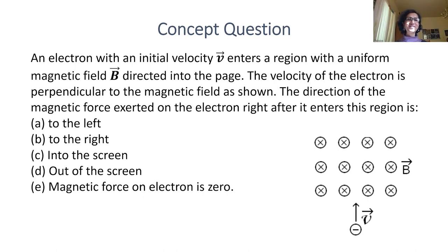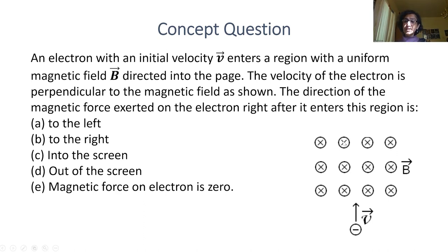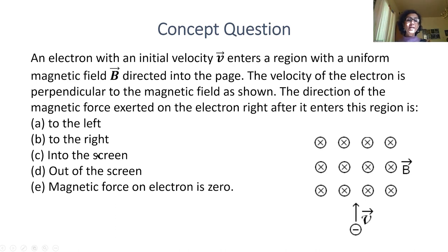Next concept question: an electron with initial velocity V enters a region with uniform magnetic field directed into the page, shown by crosses. The velocity is perpendicular to the magnetic field. What is the direction of the magnetic force on the electron right after it enters the field — left, right, into the screen, out of the screen, or no force? Stop the video, think about it, and come back.